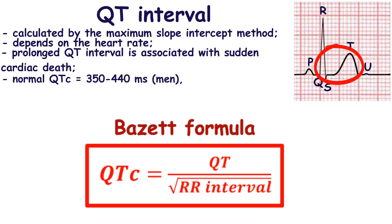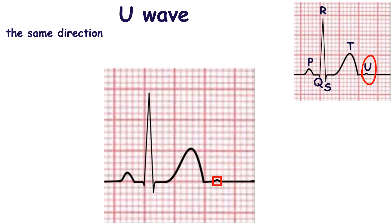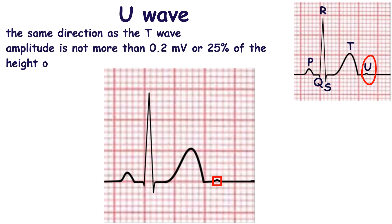The QT corrected is normal if it is less than 440 ms in men or 460 ms in women, and more than 350 ms. Prolongation of the QT corrected interval beyond 500 ms is strongly associated with an increased risk of sudden cardiac death. Normally, the U wave has the same direction as the T wave, with an amplitude no more than 0.2 mV or 25% of the height of the T wave.